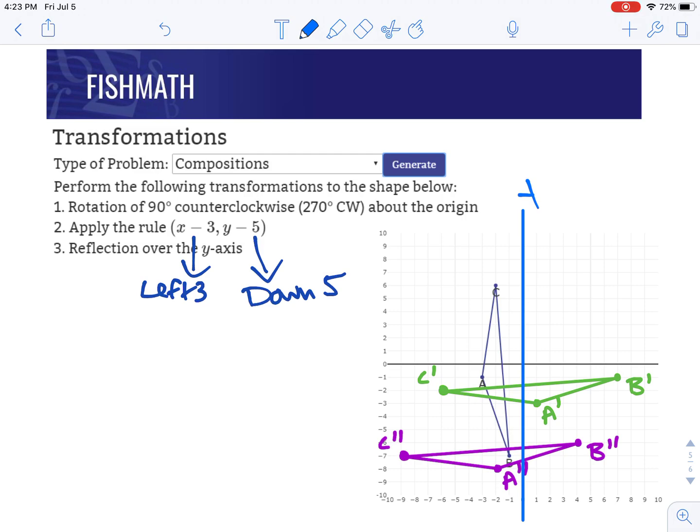Looking at B double prime, that's four to the right, so it's going to go four to the left, and it's not going to change height. It's going to be the same height, just going to flip over the line and go left instead of right. So at negative four, it would be B triple prime. A is two to the left, so it becomes two to the right, A triple prime.